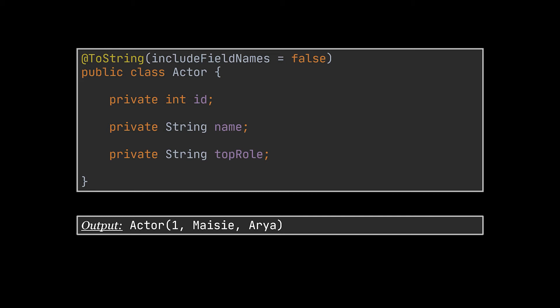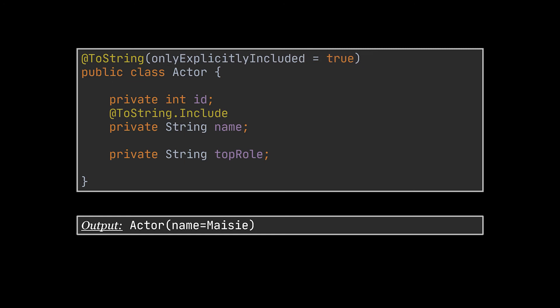Another thing you can do is exclude specific fields from the toString method using the @ToString.Exclude annotation on those fields. In our case the id field was excluded. If you would like to cherry-pick the fields to include, you can use the onlyExplicitlyIncluded argument alongside the @ToString.Include annotation. This can be clearly seen in the actor class where we chose to only include the name of the actor.